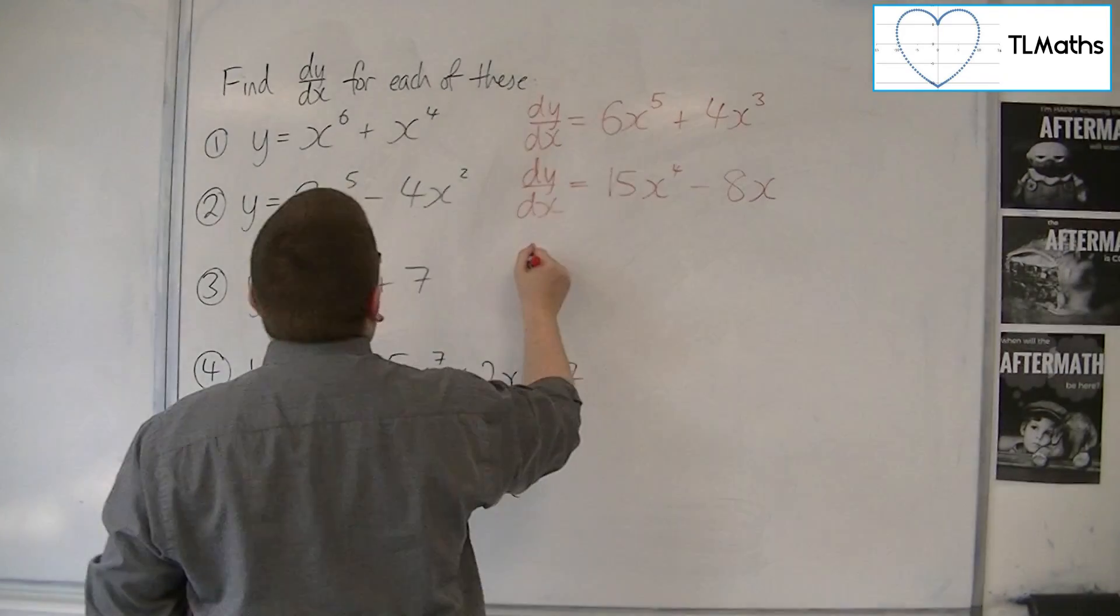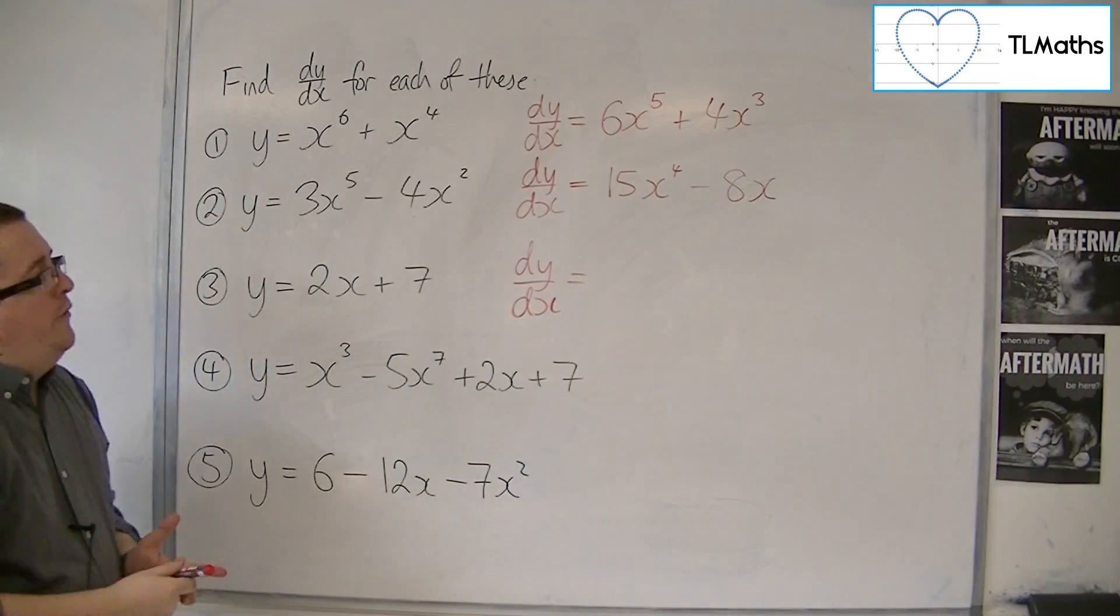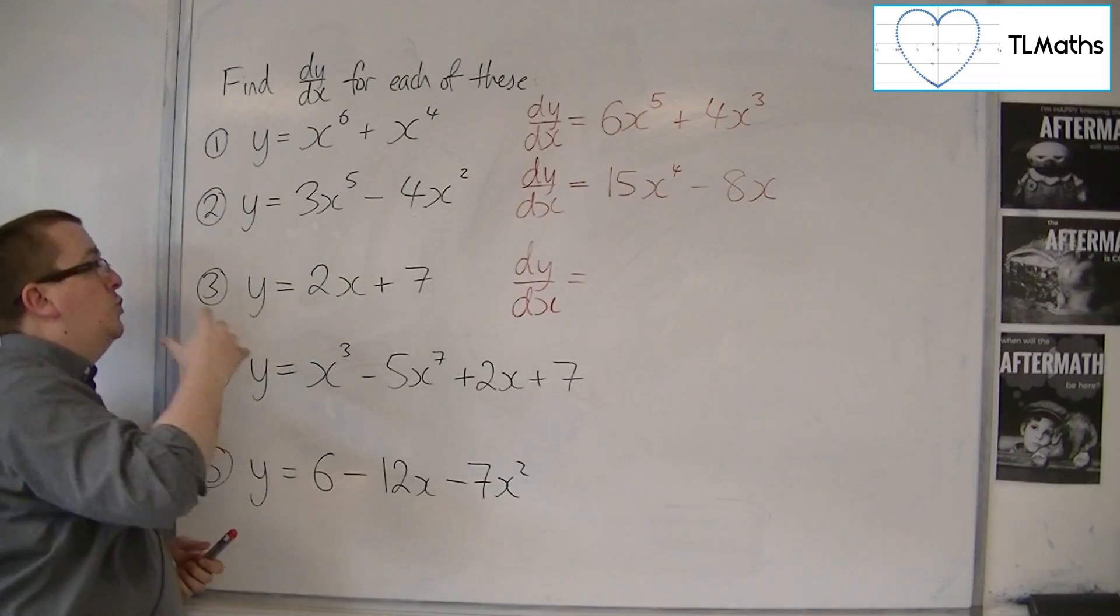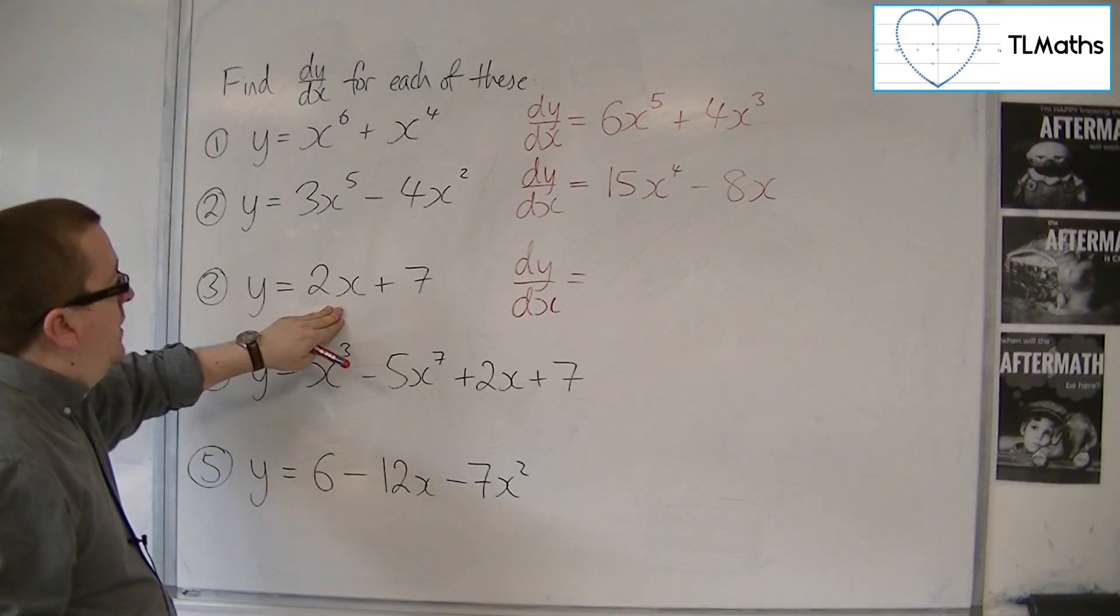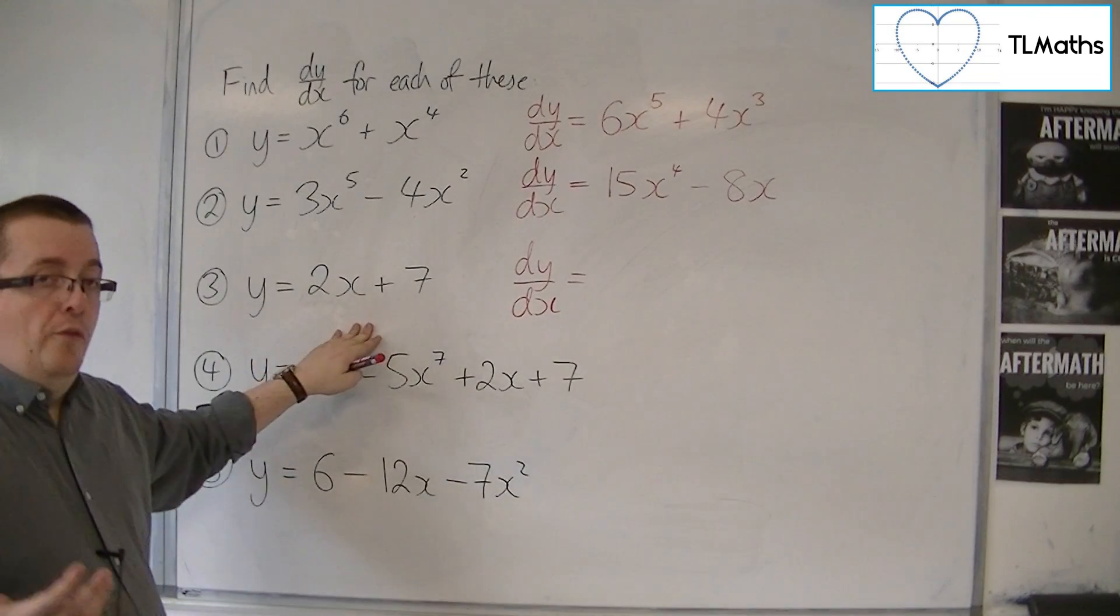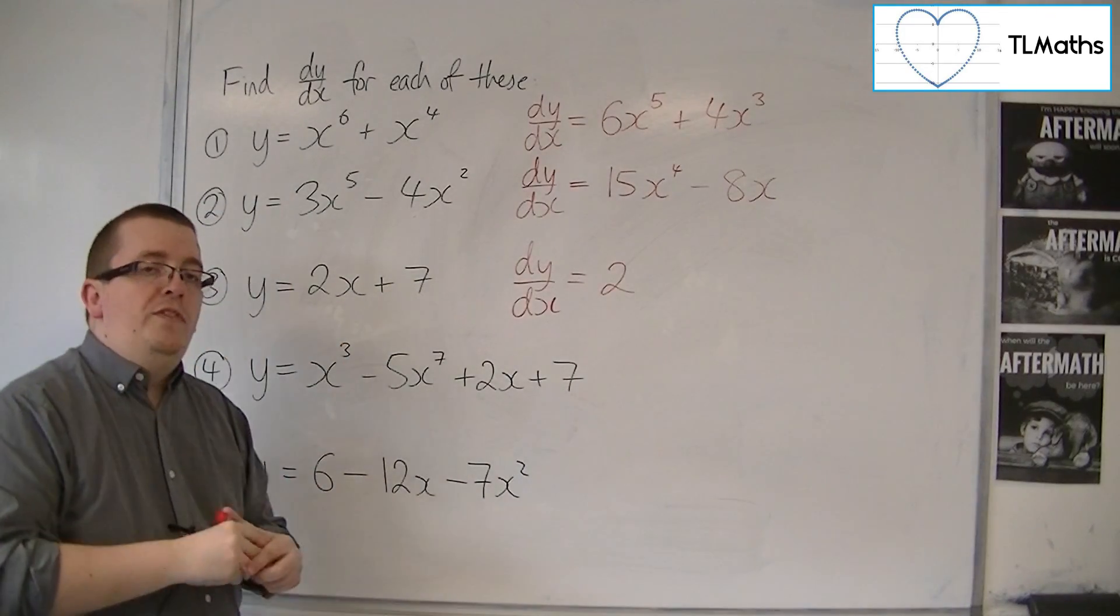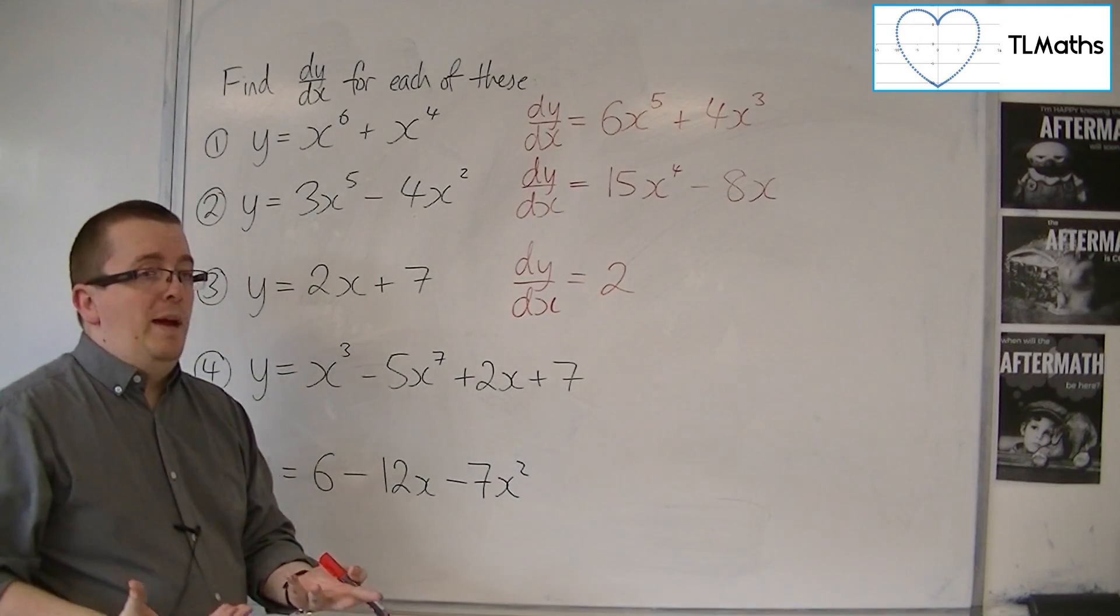Number 3, I've added in to make us remember how it worked when we were just finding the gradient of a line. So the 2x, we can easily identify what the gradient is. We know that it's going to be 2. How does it fit in with this process of the power coming down to the front and taking 1 off the power?